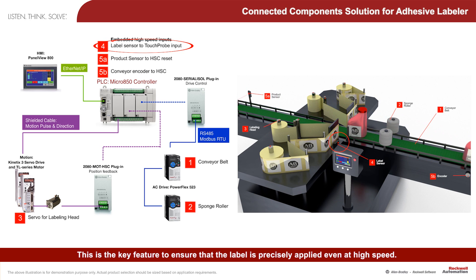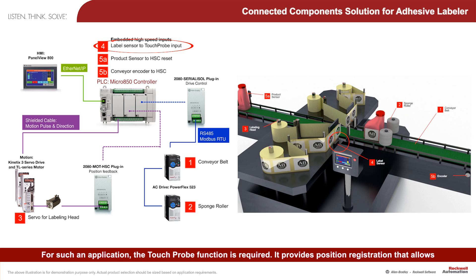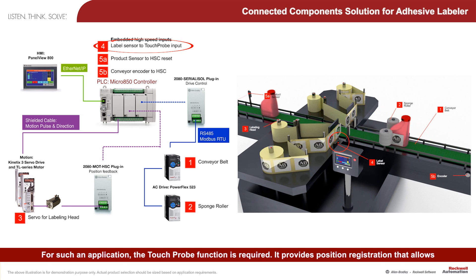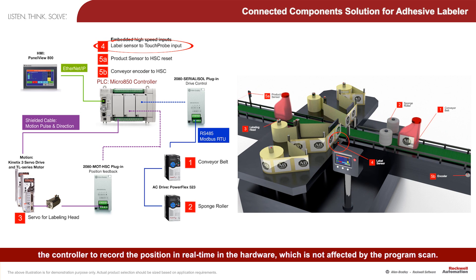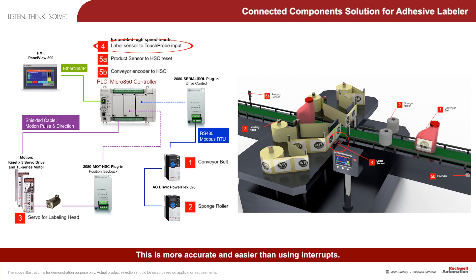This is the key feature to ensure that the label is precisely applied even at high speed. For such an application, the touch probe function is required. It provides position registration that allows the controller to record the position in real time in hardware, which is not affected by the program scan. This is more accurate and easier than using interrupts.